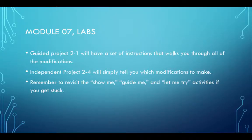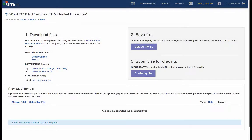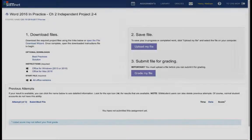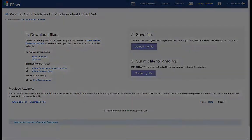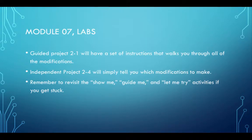You have two projects to do for your labs this module. These projects will ask you to download a starter file, modify them, and upload them. Guided Project 2.1 will have a set of instructions that walks you through all of the modifications. Independent Project 2.4 will simply tell you which modifications to make. Remember, if you find yourself getting stuck on the projects, go back into the SIM book and practice with the Let Me Try exercises.